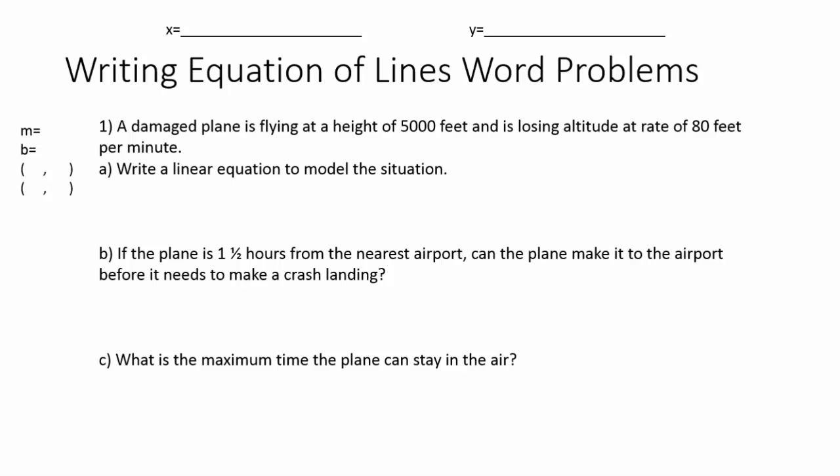The topic for today is writing equations of lines when given word problems. It's going to be the same math we've been doing before, but just trying to set it up and find what we're given in the problem. The trickiest part will be deciding whether you're given the slope, the y-intercept, ordered pairs, and so on. We'll break it down so we can see when we're given each of these things.